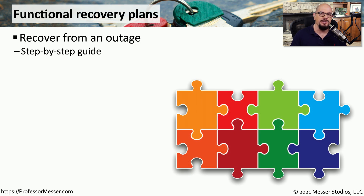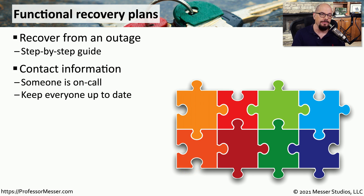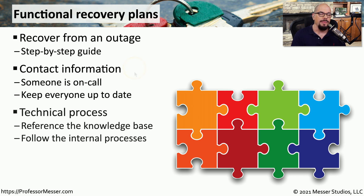When an outage occurs, there needs to be a set of processes and procedures that can take us from the very beginning of resolving the issue all the way through to getting back up and running. This is a functional recovery plan — a step-by-step guide from going from an outage to being back up and running. One of the more important items in your functional recovery plan is contact information for all the key players. You need to know who's on call, who can address the particular problem, and you need to have contact information for everyone involved so that you can keep everyone up to date. Along with keeping the lines of communication open, we also need to understand the technical process we would go through to resolve this problem.